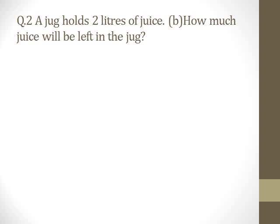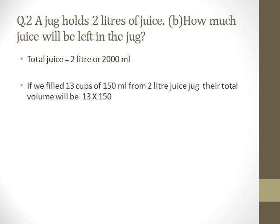Now we have part B of question two: how much juice will be left in the jug? This relates to part A. After filling 13 cups, the total juice was 2 liters or 2000 ml. Each cup has a capacity of 150 ml, and the 14th cup was not fully filled, so we need to find exactly how much juice went into the 13 cups.